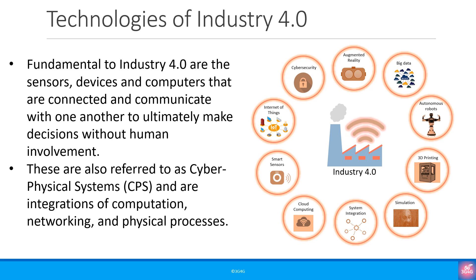Also shown are augmented reality, big data, automated robots, 3D printing, simulation, system integration, cloud computing and smart sensors. These among others make Industry 4.0 possible and the smart factory a reality. As a result of smart machines that keep getting smarter as they get access to more data, Industry 4.0 means our smart factories will be more and more efficient and productive and less wasteful.